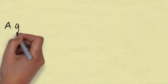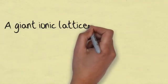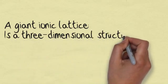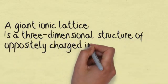A giant ionic lattice is a three-dimensional structure of oppositely charged ions held together by strong ionic bonds.